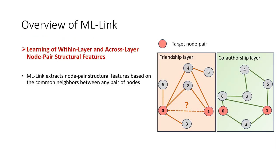In the first component of ML Link, we learn node structural features at each layer, and then we generate link information based on the common neighbors between any pair of nodes, which may be located in different layers. This approach triggers a twofold effect.